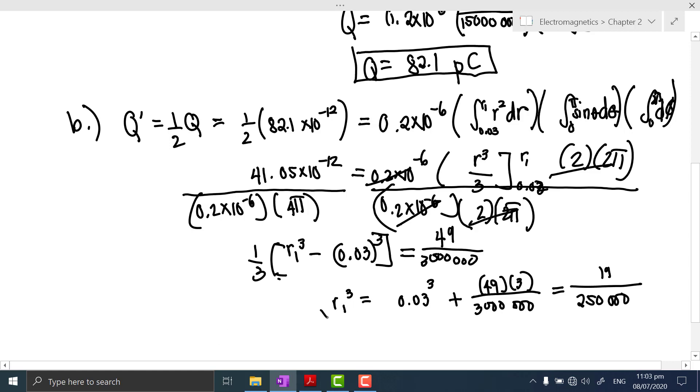Simplifying further, cross multiply 3 to the other side and move 0.03³. We get 0.03³ plus 49 times 3 divided by 3 million, which is equal to 19 over 250,000. Then we get the cube root. So R₁ becomes the cube root of this answer, 0.0423, or that is in meters, that is equivalent to 4.23 centimeters. So, that is the final answer. Thank you for listening.